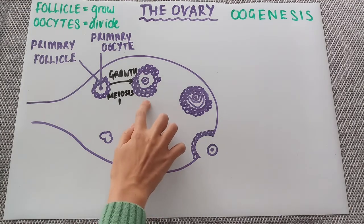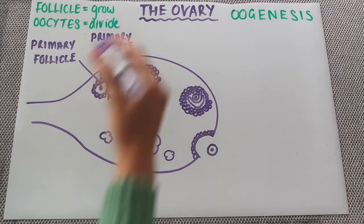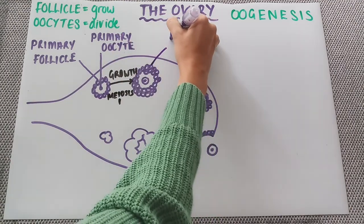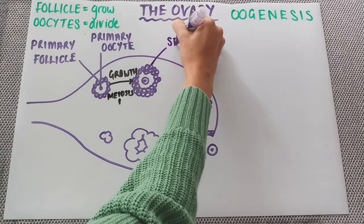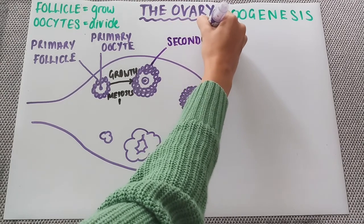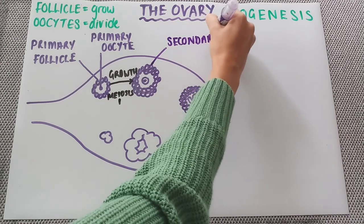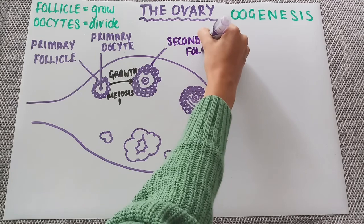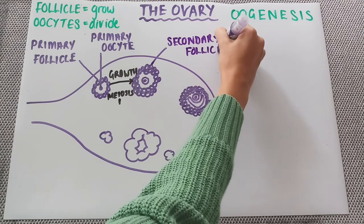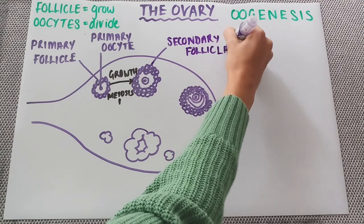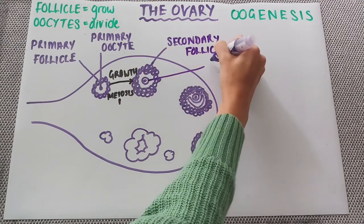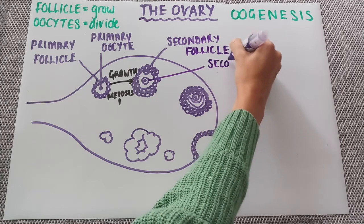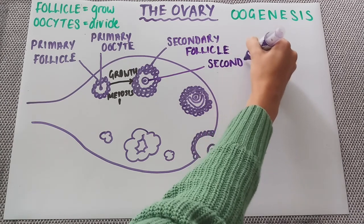This forms the second structure here, which is a secondary follicle, which contains a secondary oocyte.